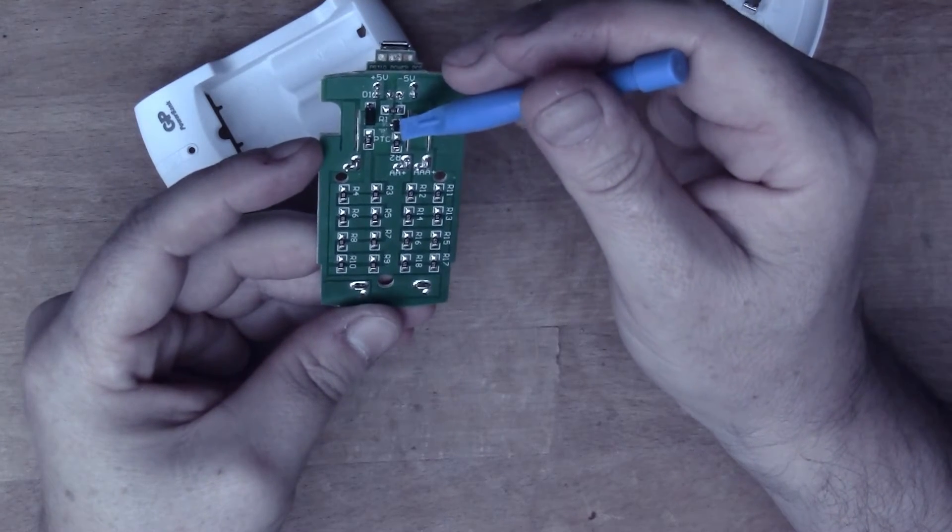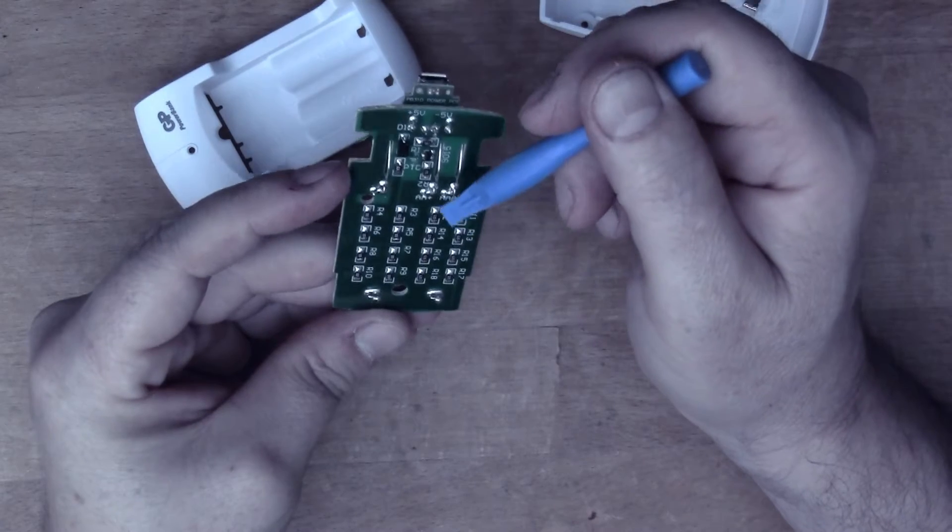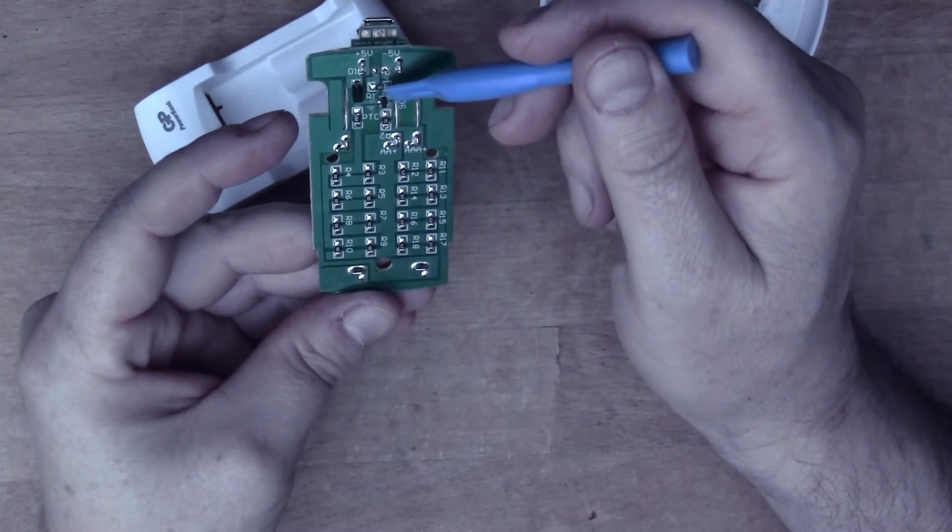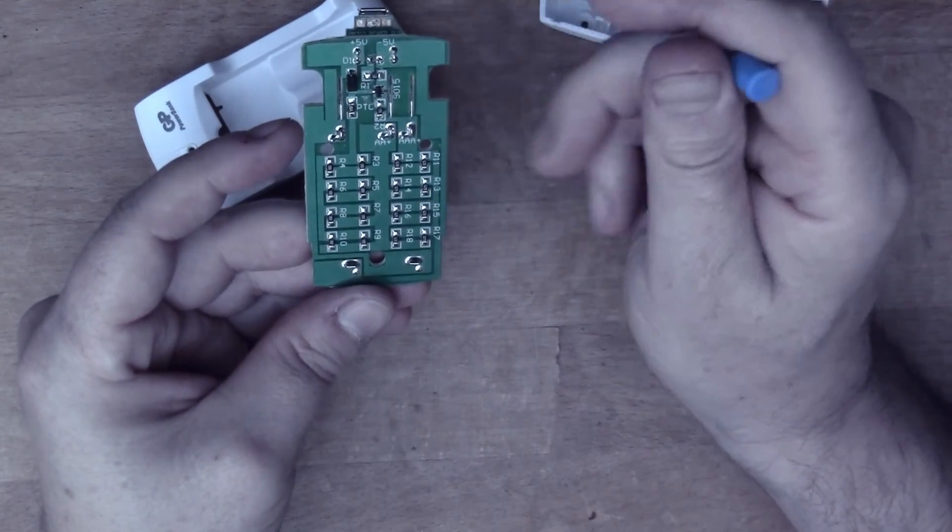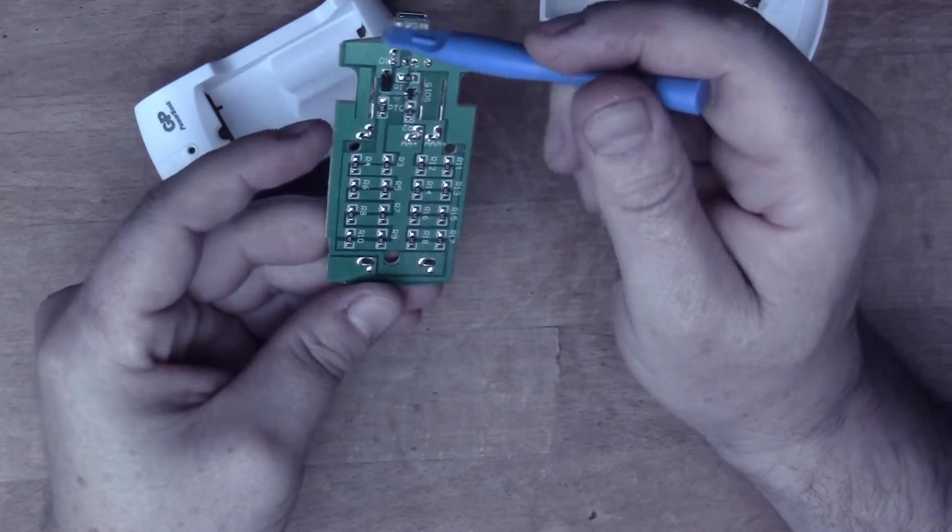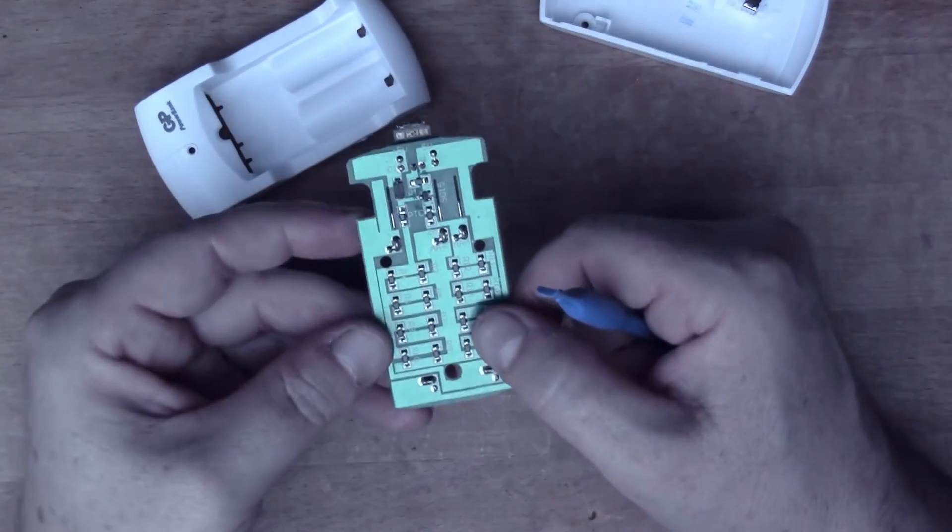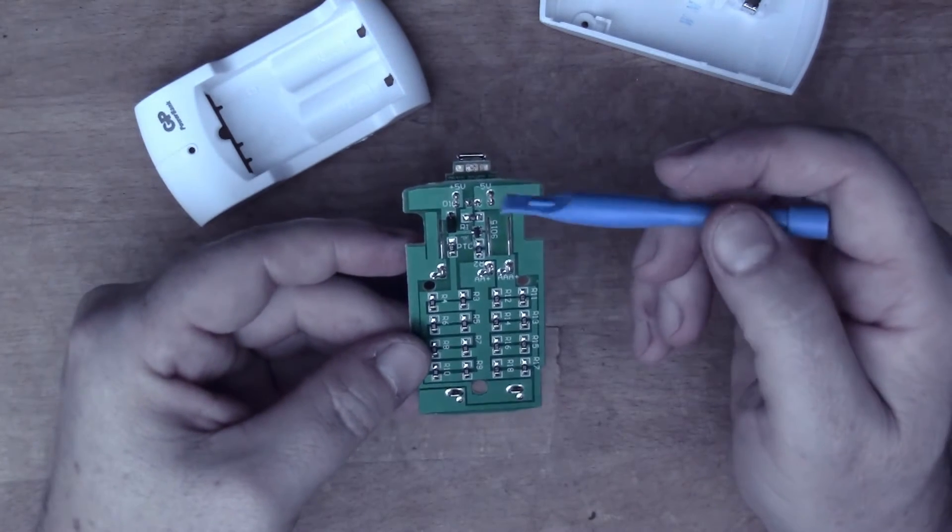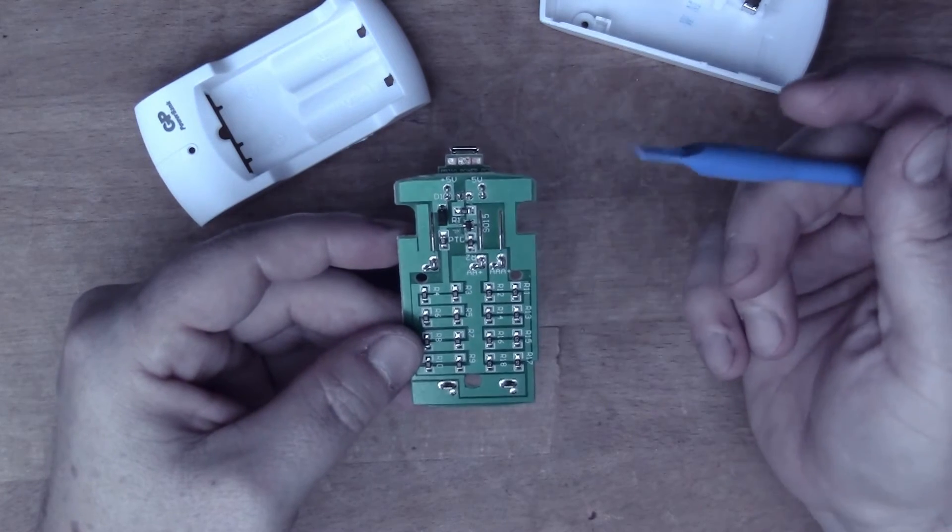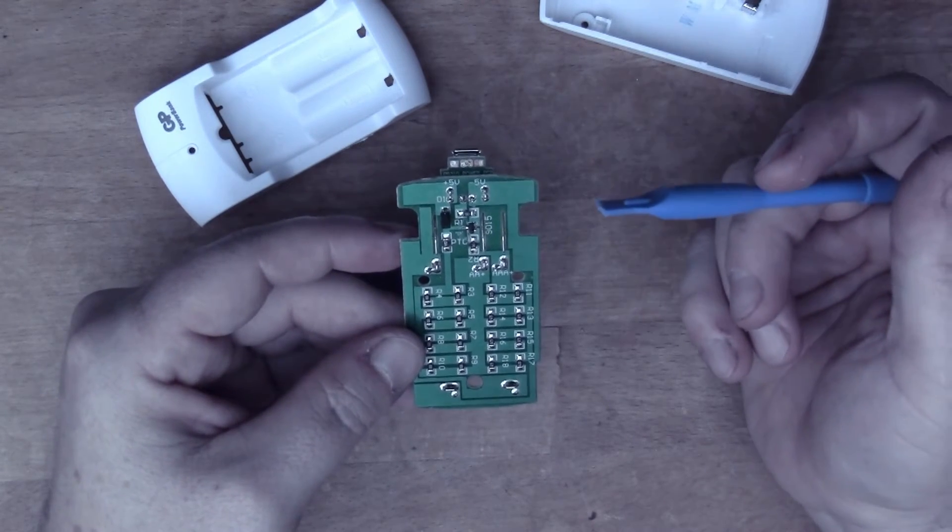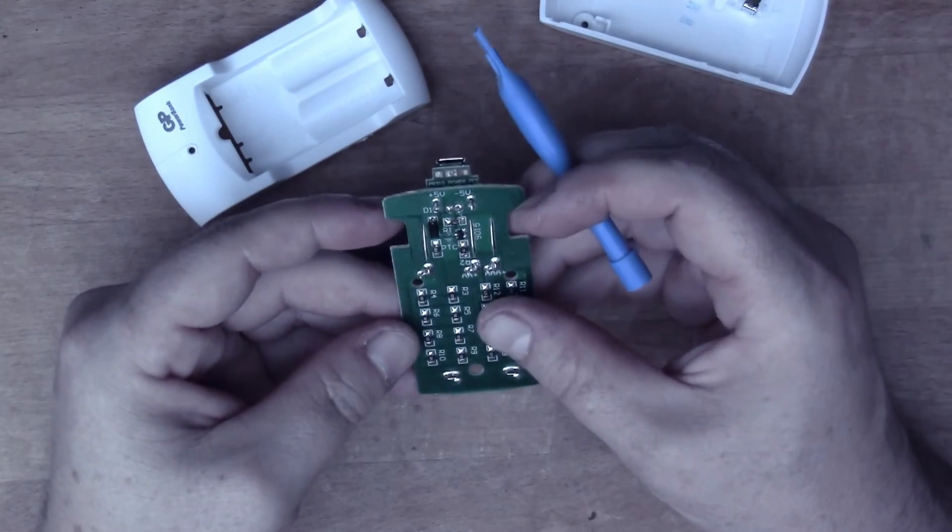It doesn't look to me like there's any current limiting here. For nickel metal hydride batteries, you're meant to charge them at a constant current. That's the main mechanism for charging a nickel metal hydride battery. So let me work out the circuit diagram.